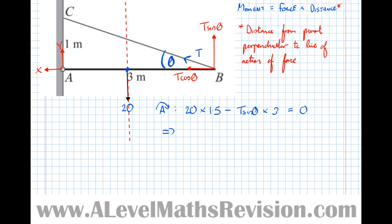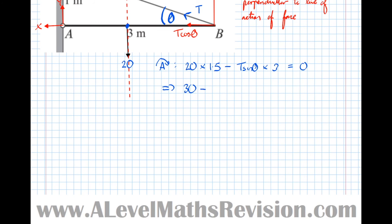So all moments sum to 0. Well, that now implies that 30 take 3T. We found that sine theta earlier was 1 over root 10. So 3T over root 10 equals 0. Which means that 3T over root 10 equals 30.